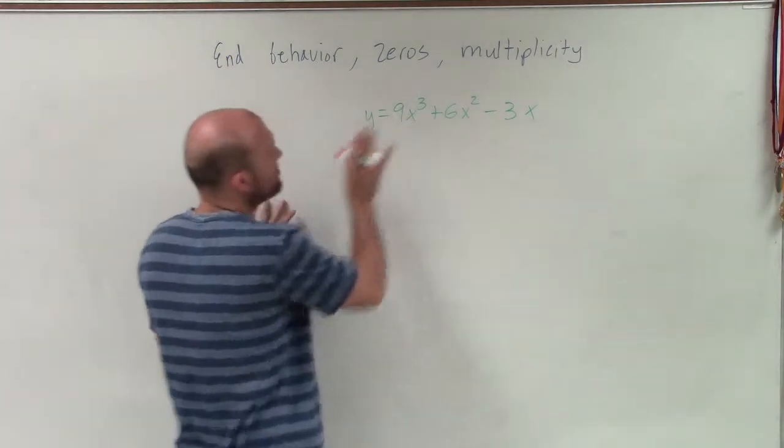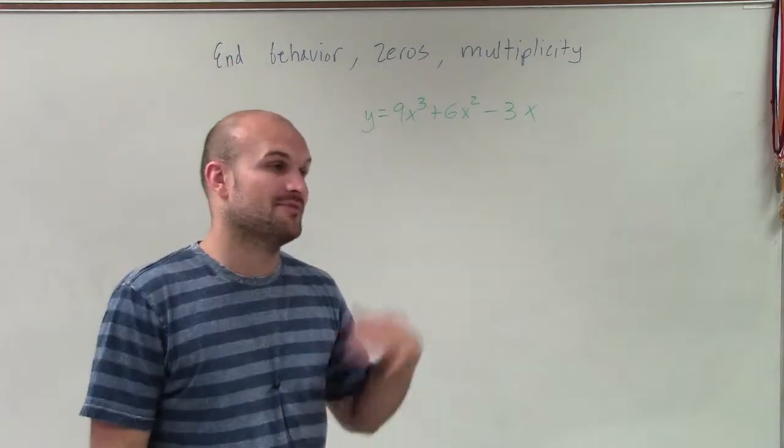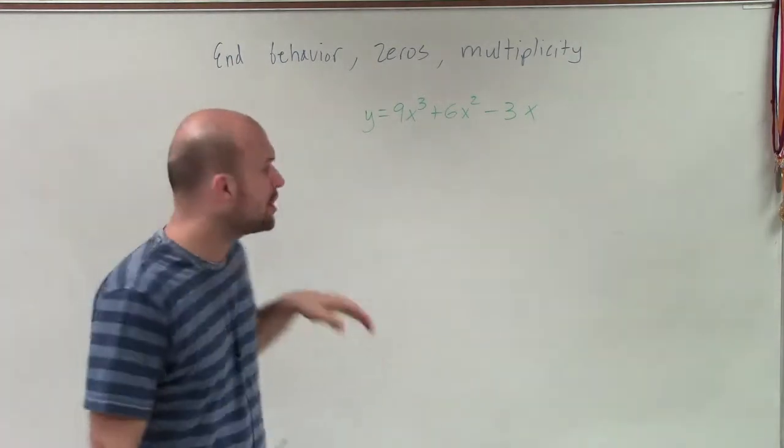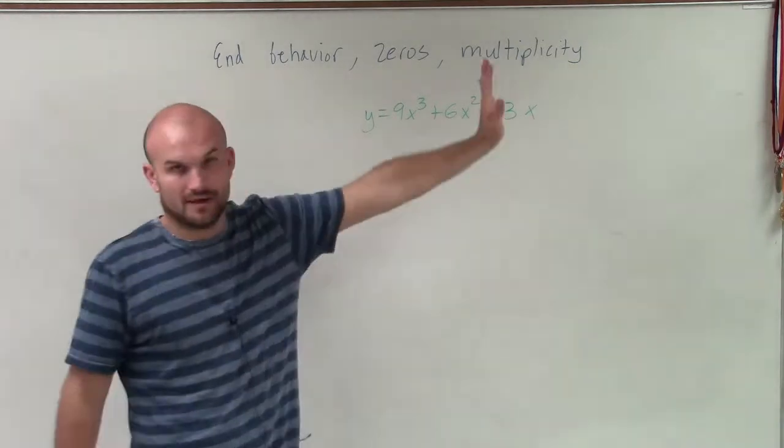First though, to determine the end behavior, we look at the degree. We determine the degree is odd. And we also look at our leading coefficient, which is 9, which is positive. So therefore, we know our graph is going to fall left and then rise right.